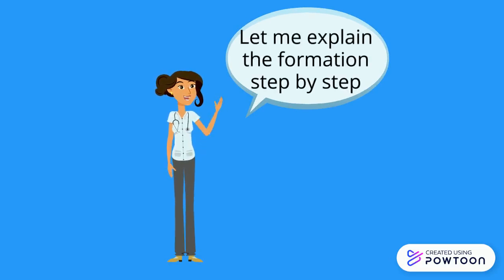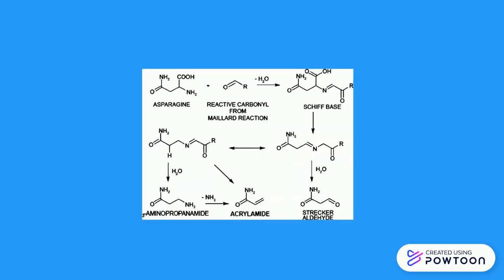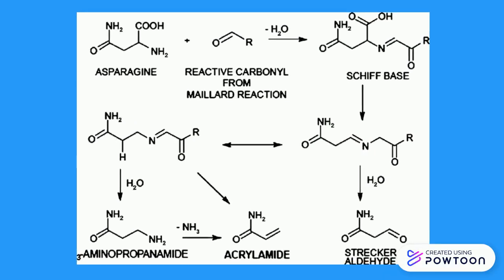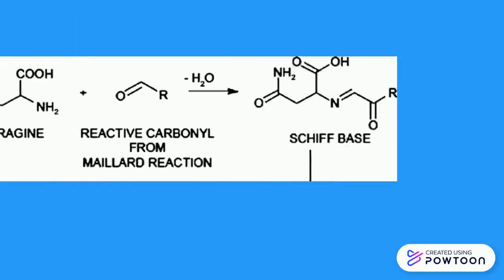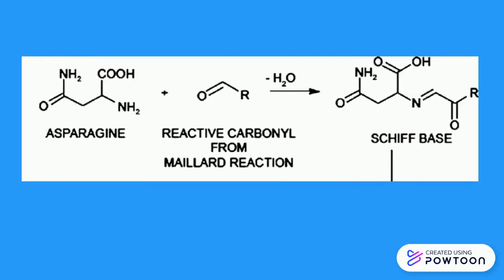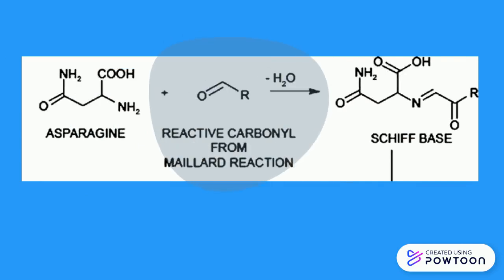Let me explain the formation of acrylamide through the Maillard reaction step by step. Here are the procedures from asparagine, which is an amino acid, to acrylamide at a glance. In the first step, the α-amino group of asparagine reacts with a carbonyl group, leading to the formation of a Schiff base.